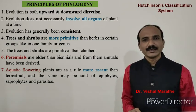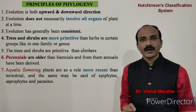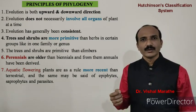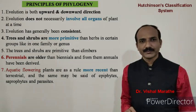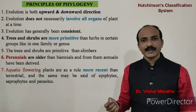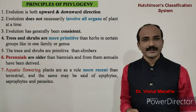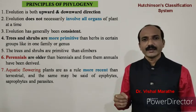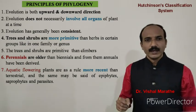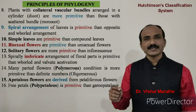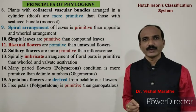Trees and shrubs are more primitive than herbs within certain groups such as a family or genus. Trees and shrubs are more primitive than climbers. Perennials are older than biennials, and from them annuals have been derived. Aquatic flowering plants are as a rule more recent than terrestrial plants, and the same may be said for epiphytes, saprophytes, and parasites. Plants with collateral vascular bundles arranged in a cylinder are more primitive than those with scattered bundles, as found in monocotyledons.